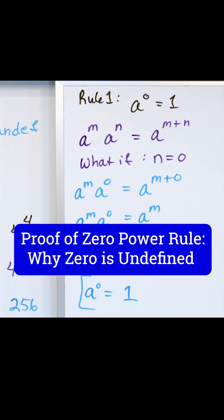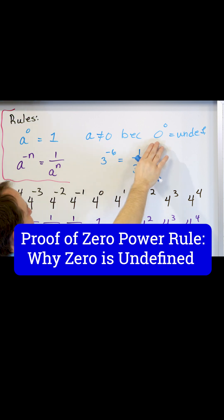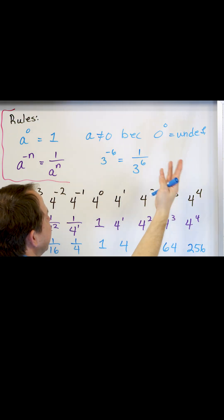If you go back to the original rule that we had, we said that this was true, but only if a was not zero. We said that zero to the zero is undefined. It doesn't exist.